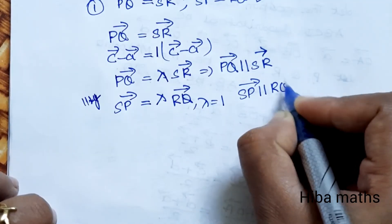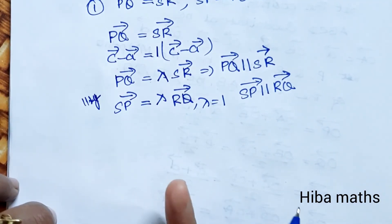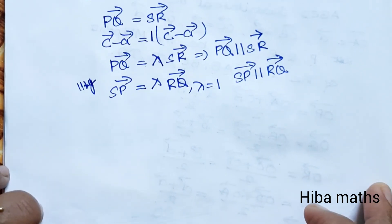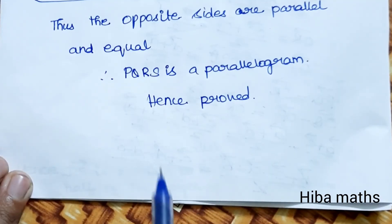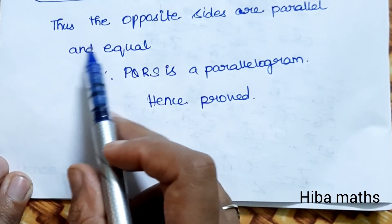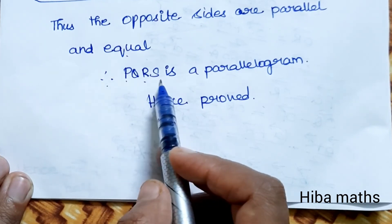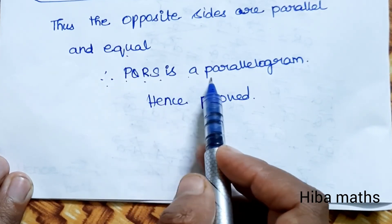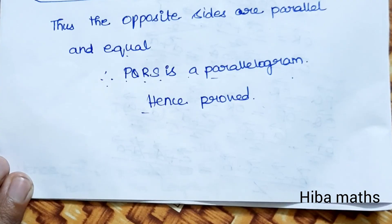We have proved all conditions: opposite sides are equal and parallel. Hence PQRS is a parallelogram. Hence proved. You can understand some easy things — thank you so much for watching.